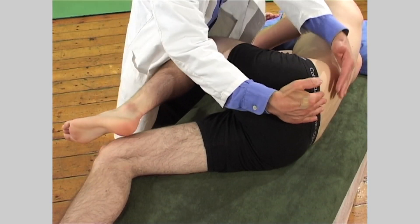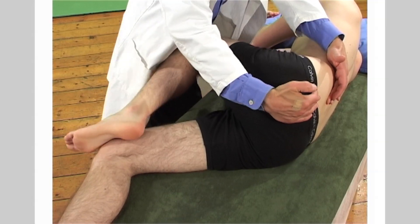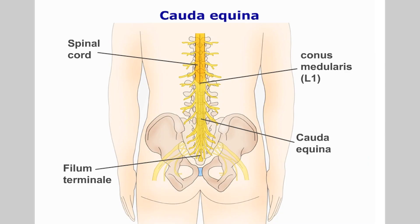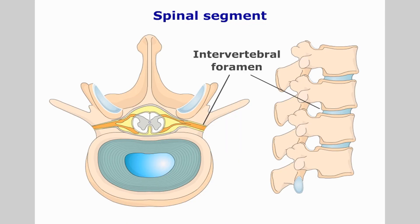A small degree of movement is possible in the sacroiliac joints. The sacral canal contains the lowest parts of the cauda equina and the anterior and posterior nerve roots of S1 to S5. The end of the canal forms the attachment for the meninges known as the filum terminale. There are anterior and posterior foramina through which the sacral nerve roots emerge to innervate structures in the pelvis and lower extremities.